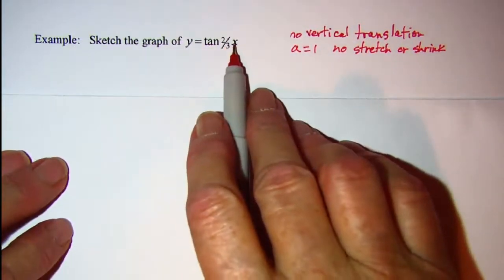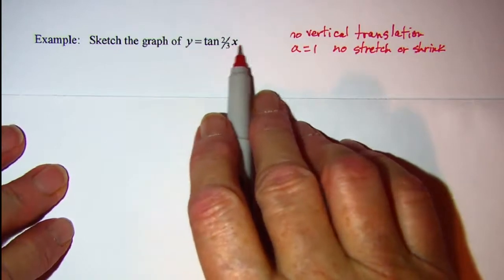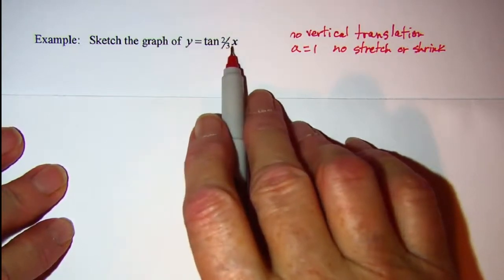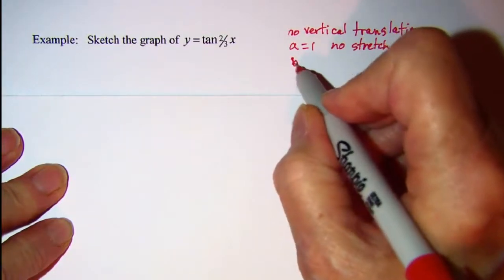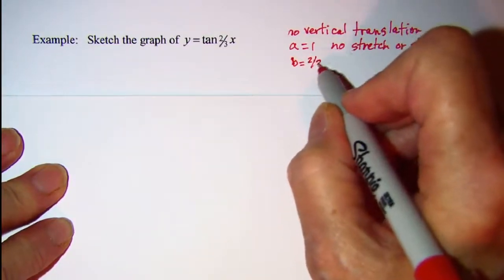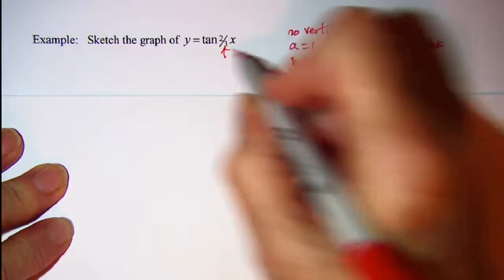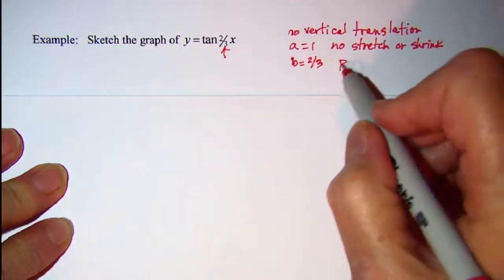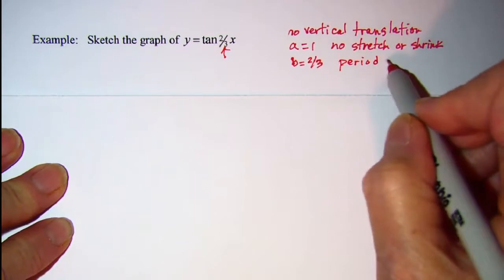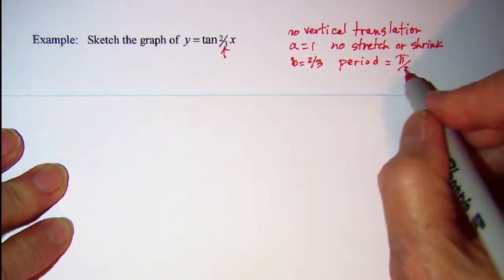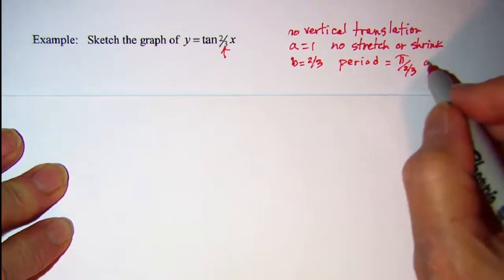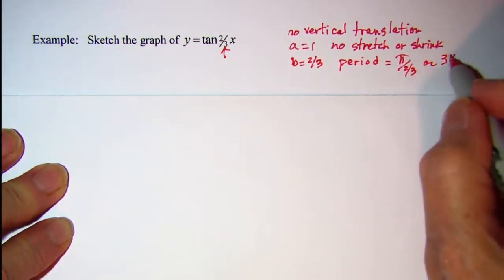We see that our B value, the coefficient of x, is two-thirds, so that means that our period is π over two-thirds, or three-thirds, or three π over two.